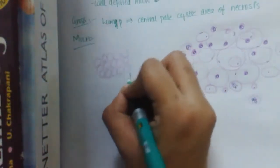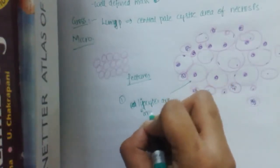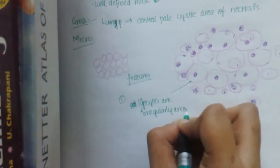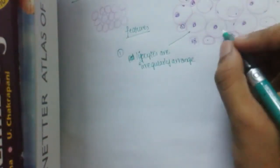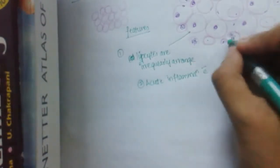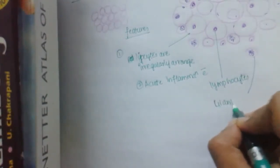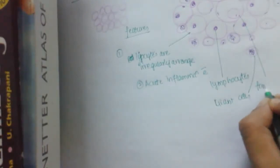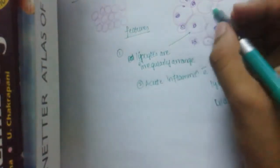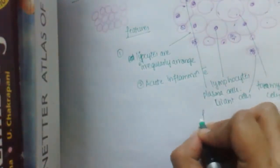So mainly what are the features? The features include: one, the adipose tissue or liposides are irregularly arranged. And there is acute inflammation. Second one is acute inflammation with you can see lymphocytes, you can see giant cells, you can see foamy macrophages, foamy cells. And you can also see... This is fat necrosis.